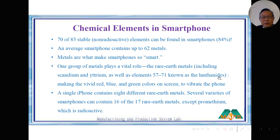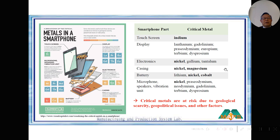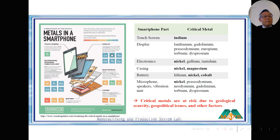In fact, 16 to 17 rare earth metals are commonly used. This picture shows the touch screen display, phone speakers, vibration unit, electronics, battery, and casing — each part utilizes different metals. I'd like to emphasize indium: without indium, this screen is not a touch screen; it does not function.